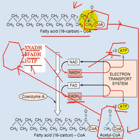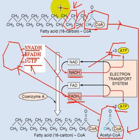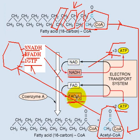By removing the next two carbons in the next round, we again produce acetyl-CoA, NADH, and FADH. Then we remove another two carbons and again produce acetyl-CoA, NADH, and FADH. This continues — by removing every two carbons, we produce acetyl-CoA, NADH, and FADH. Each acetyl-CoA enters the Krebs cycle and produces NADH, FADH, and GTP. Hope this helps.